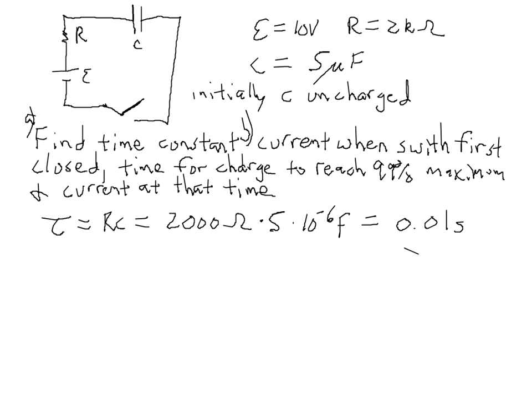So what we'll do is use the equation for current in a charging capacitor. The equation for current in a charging capacitor is equal to E or V, if you want to call the battery voltage V, over R times E to the minus T over RC. Well, when the switch is first closed, the time is 0 because the T in that equation is the amount of time that has passed since the closing of the switch.